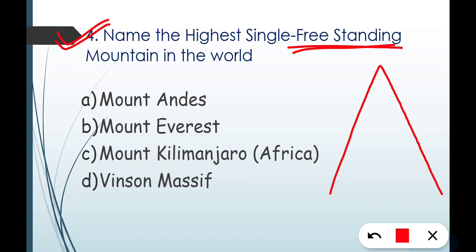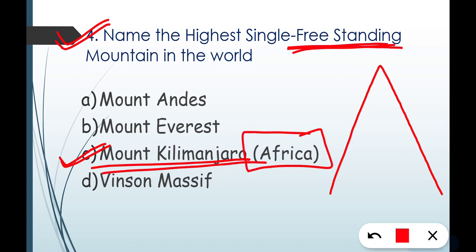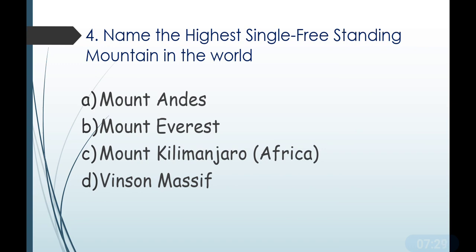You may have heard the news that when astronauts go to the Moon, from there two things on Earth are most visible — the Great Wall of China and Mount Everest. However, for highest single freestanding mountain, the correct answer is Mount Kilimanjaro. Mount Kilimanjaro is located in Africa, and it is the highest single freestanding mountain in the world.